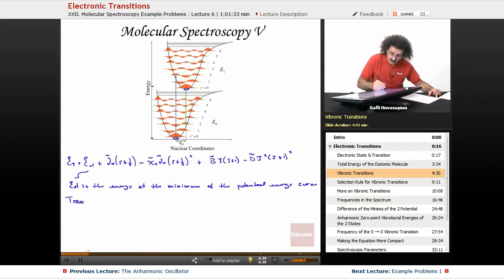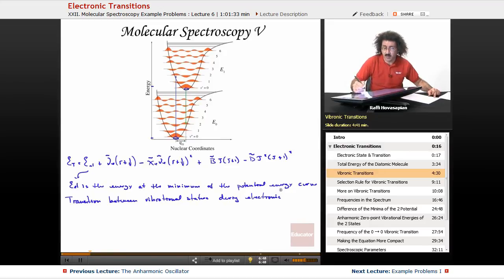Now, transitions between the vibrational states during electronic transitions, during electronic transitions, in other words, during the transition from one electronic state to another, are called vibronic transitions.